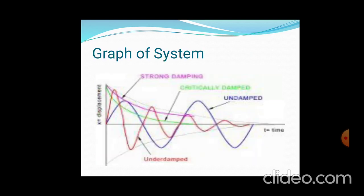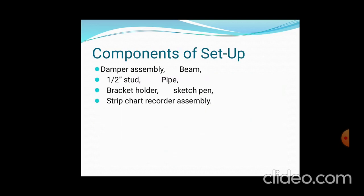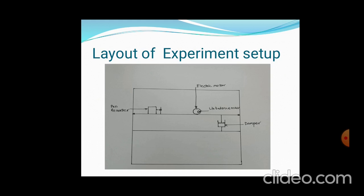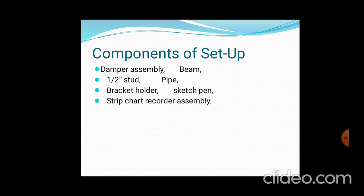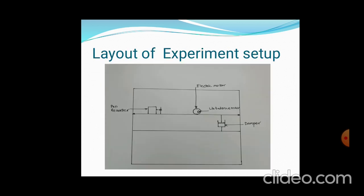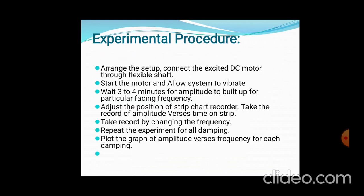This typical graph shows a comparison of strong damping, critical damping, undamped, and under-damped situations. The components available in the system include an electric motor, unbalanced mass, damper, pen recorder, strip chart recorder assembly. The layout shows a basement attached to a damper, over which there is a simply supported beam with a disc rotated by an unbalanced mass.